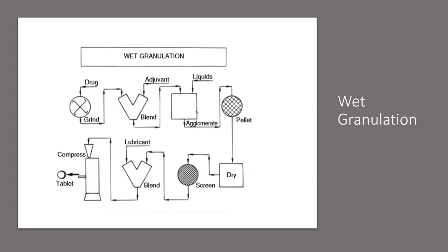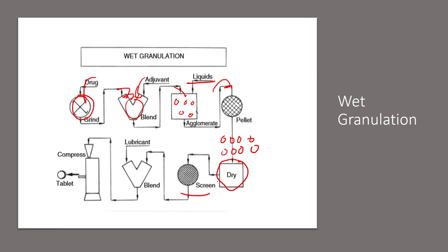This is the general process of wet granulation. You grind the drug to the appropriate particle size, add your excipients, and blend. Once you have the blended mixture, you add a liquid which forms granules that agglomerate, and you pelletize — meaning you pass it through a sieve to have uniformly sized granules. After pelletizing, you dry and screen again to have uniform granules. Once you have uniform granules, you add the lubricant, then compress, ending with a tablet.